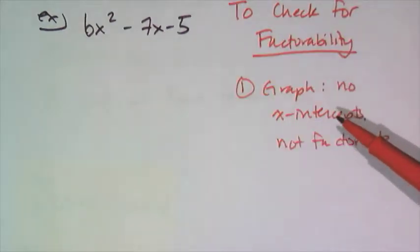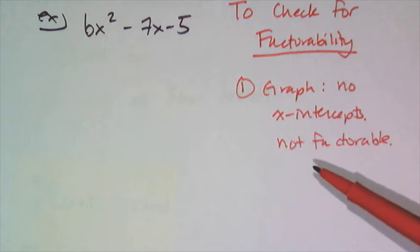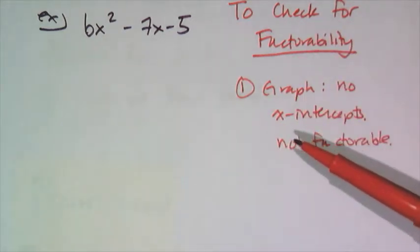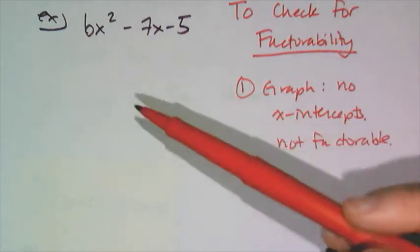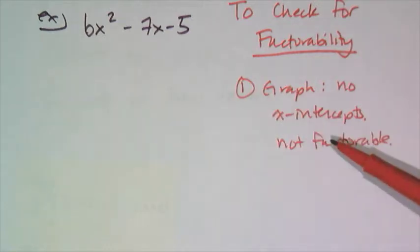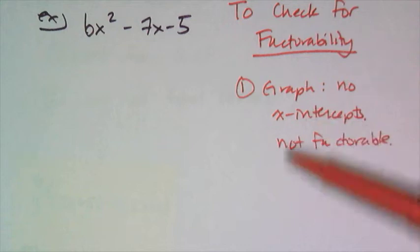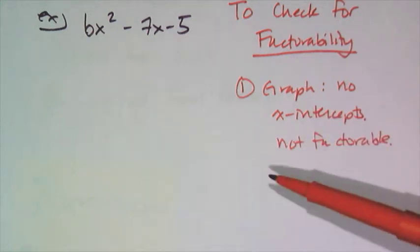So the first check for factorability is to check for x-intercepts. If there are no x-intercepts, then your polynomial is not factorable, because whether or not something is factorable ties back to x-intercepts, roots, and zeros. And if there aren't any roots, x-intercepts, or zeros, then you can't factor it over integers.